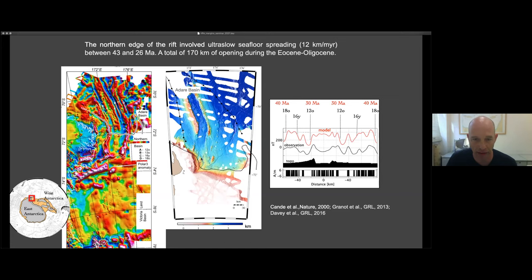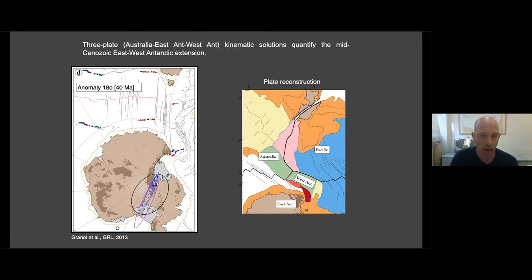Interestingly, there are two little passive margins in the south side of the Adare Basin, which are marked by a very rapid transition from the continental crust into the oceanic crust.